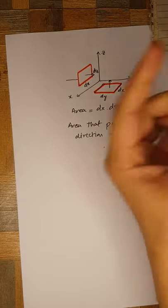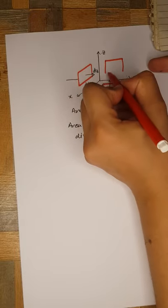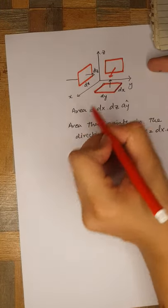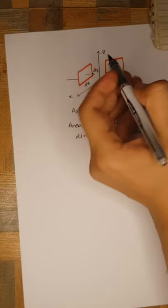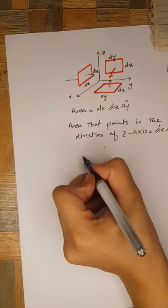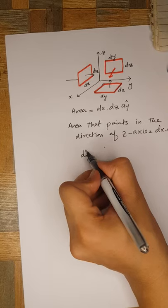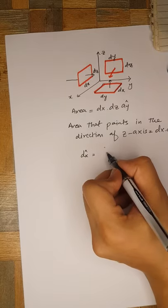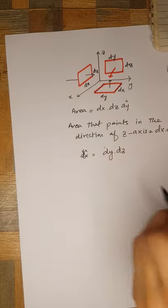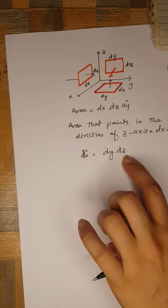Similarly, if you move along the z axis and then along the y axis, you get a differential surface whose area points toward the x axis. Its value is dy·dz, so the area along âx equals dy·dz.